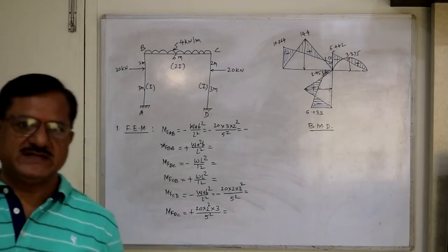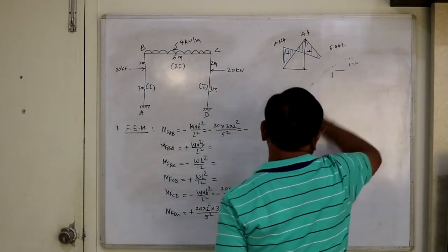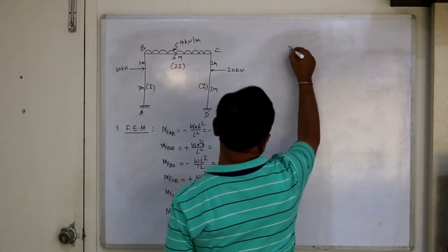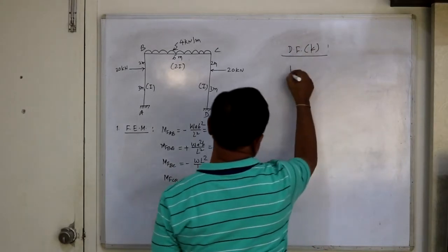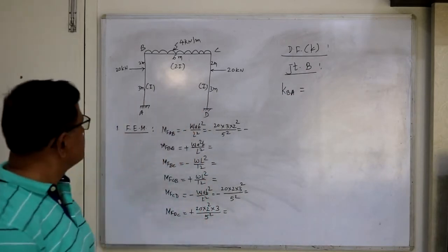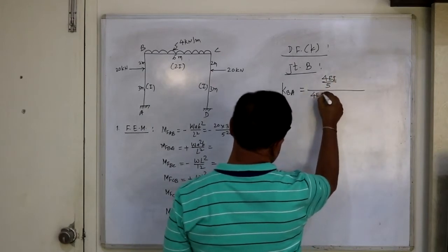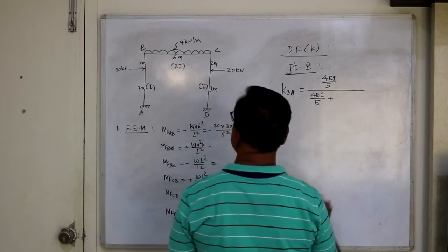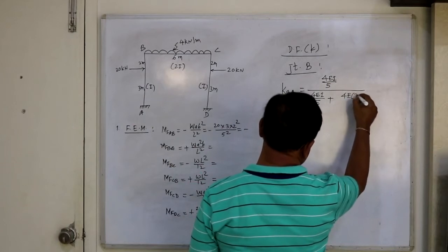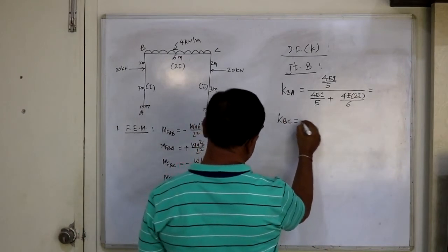You will get the fixed end moments exactly similar to a continuous beam — there is no change at all. Next, the distribution factors. There are joints at B and C. For joint B: K_BA (stiffness towards A) = 4EI/L = 4EI/5. For member BC, treating as rigid joint like a continuous beam: 4E(2I)/6. Then K_BC = 1 − K_BA. Calculate these.